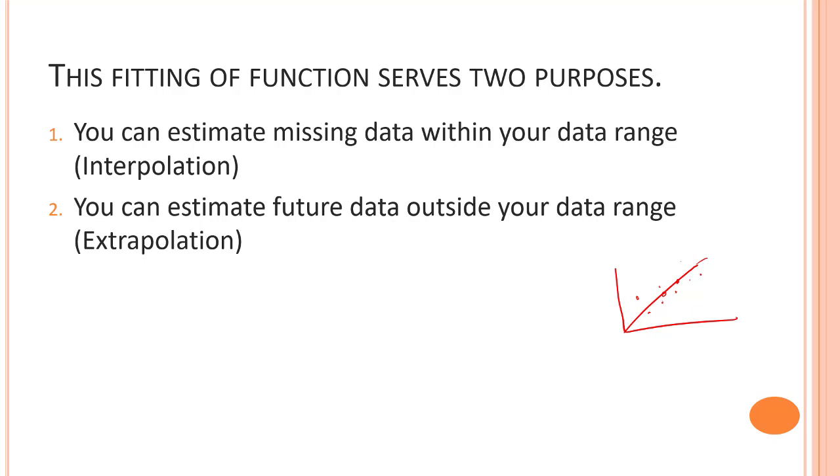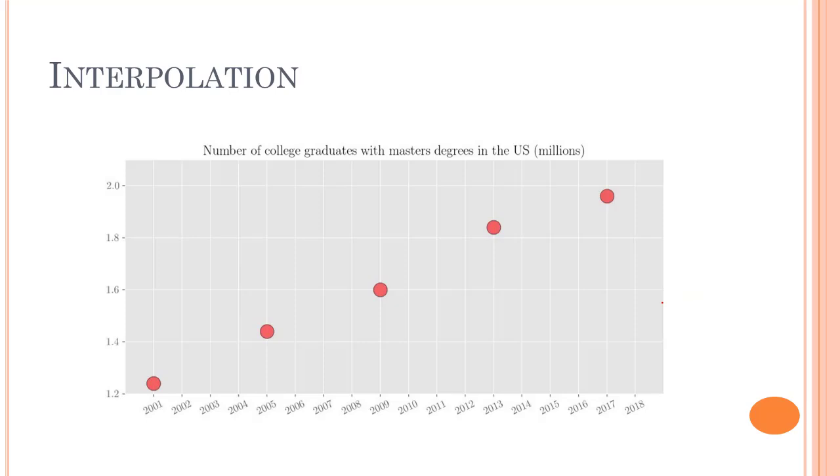Interpolation means finding out the missing data. If we fit a straight line between all of these five points - these are the features, which is again date, and these are the predictions or the target variable. This might be number of students.